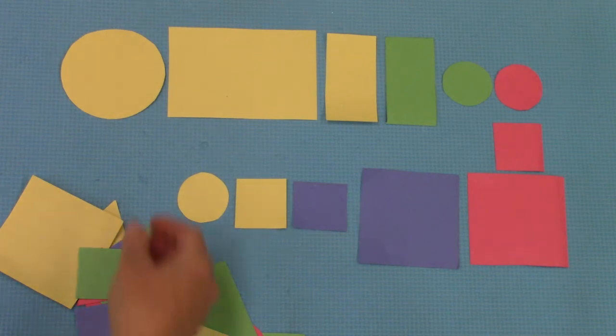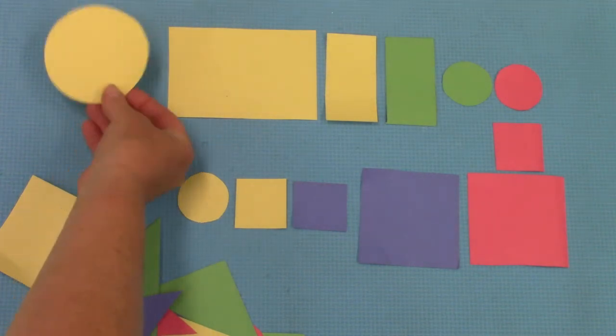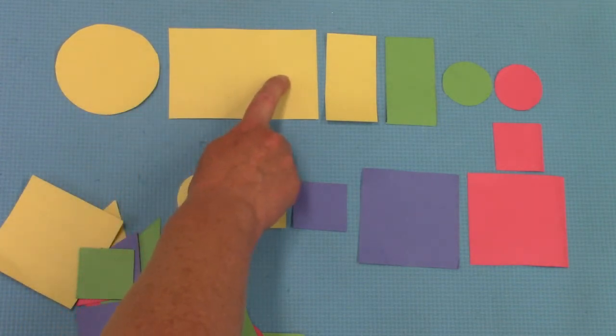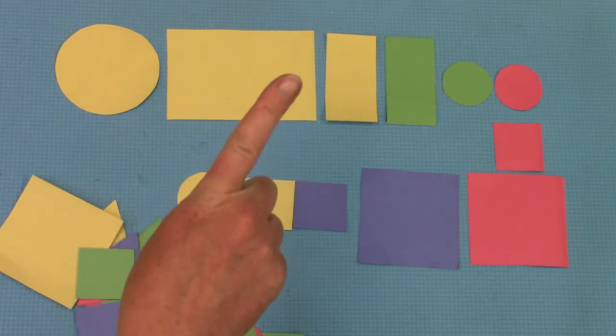Hello class! Welcome to today's math lesson. Today we are going to be identifying geometric shape pieces that are alike in only one way.